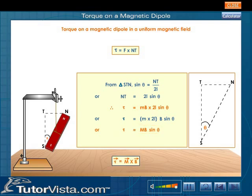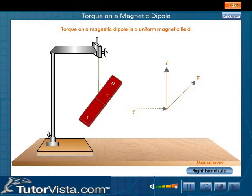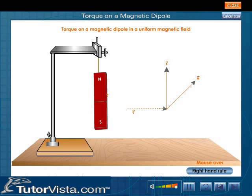In vector notation, Vector Tau is equal to Vector M cross Vector B. The direction of Vector Tau is given by the right hand rule for the cross product of vectors. The direction of Vector Tau is such that the dipole tends to set itself parallel to the field strength Vector B.